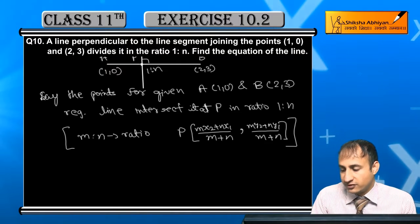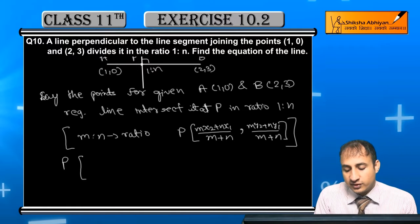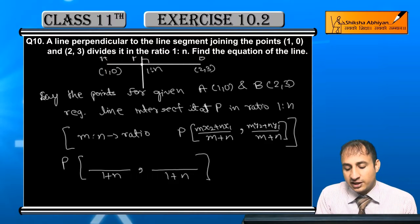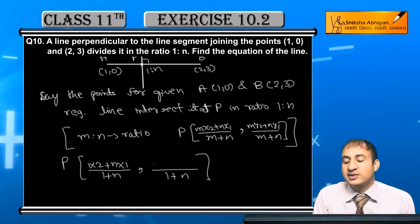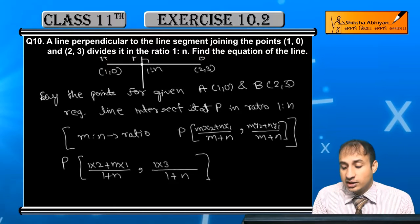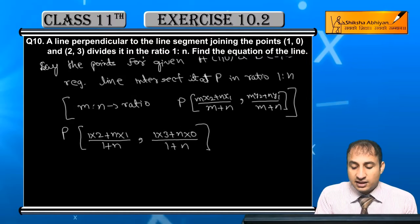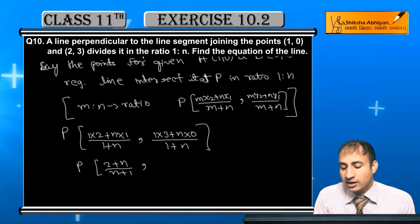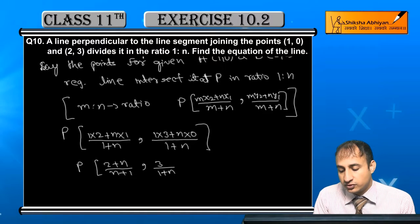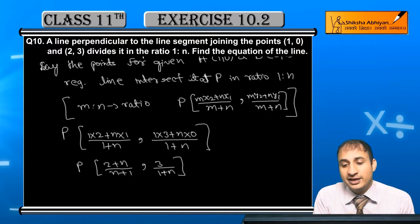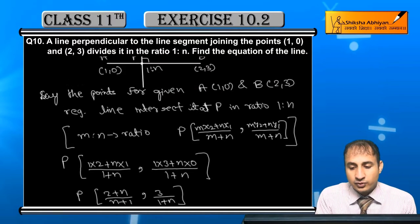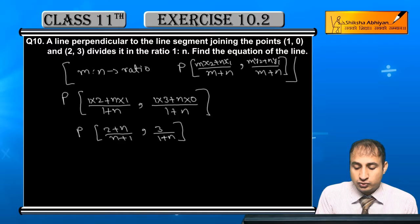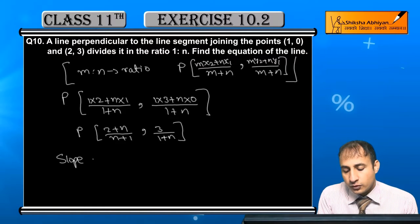So coordinates of P will be (1·2 + n·1)/(1+n), (1·3 + n·0)/(1+n). This simplifies to P = ((2+n)/(n+1), 3/(1+n)).